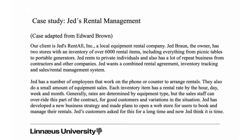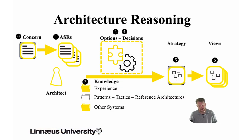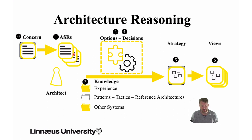Here is Lisa, whom you met before. Performance is important to her — she needs quick responses since she is working with her customers and needs access to the information Jed's Rental application should provide. The architects in the team will have to take this concern from Lisa and together with her turn it into some architecturally significant requirements.